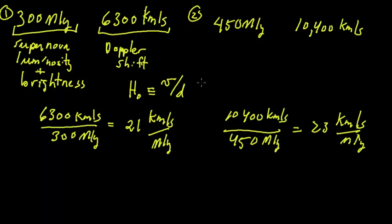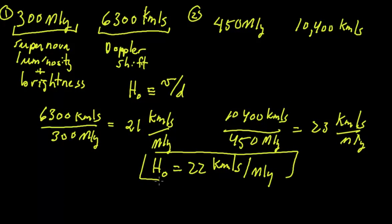And let's just take an average of these, and what's really done is they do a linear regression, and you can find the constant a little bit better, but pretty close to the current value, the best value is around 22 kilometers per second per mega light year. That's the Hubble's constant.